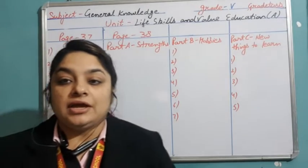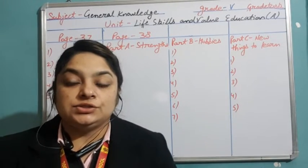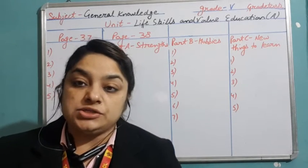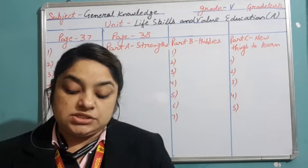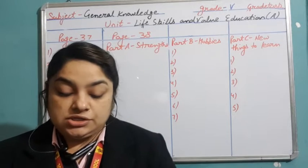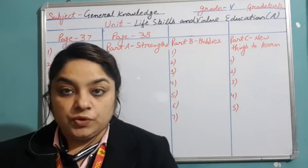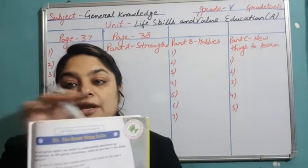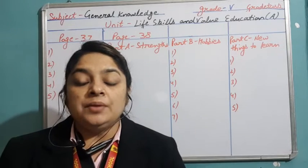Hello everyone, I hope you all are doing good. Today we'll start with Unit Life Skills and Value Education, Section A. We'll do pages 37 to 40. First of all, Chapter 30: The Better Things To Do. Open this chapter and write today's date and the task heading using your pens.